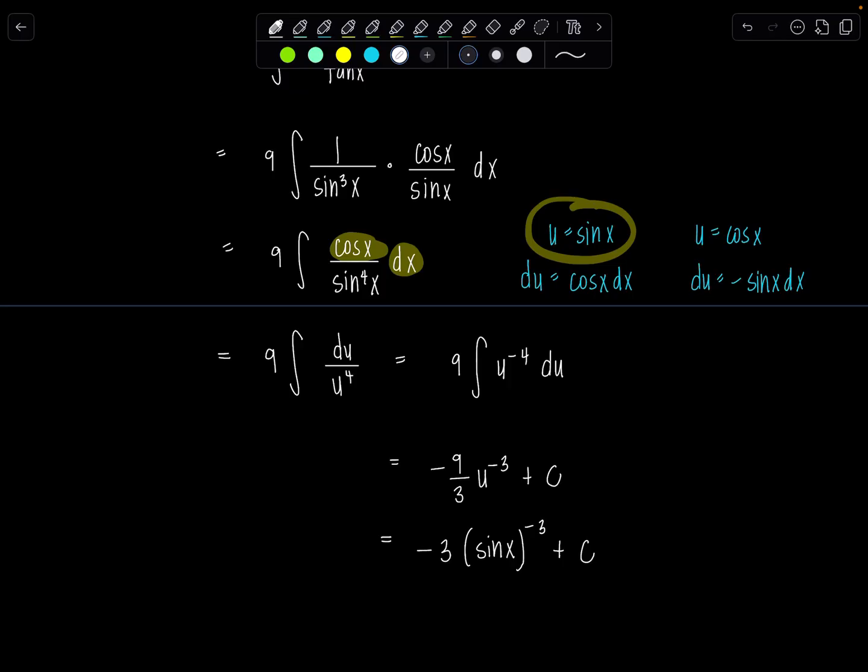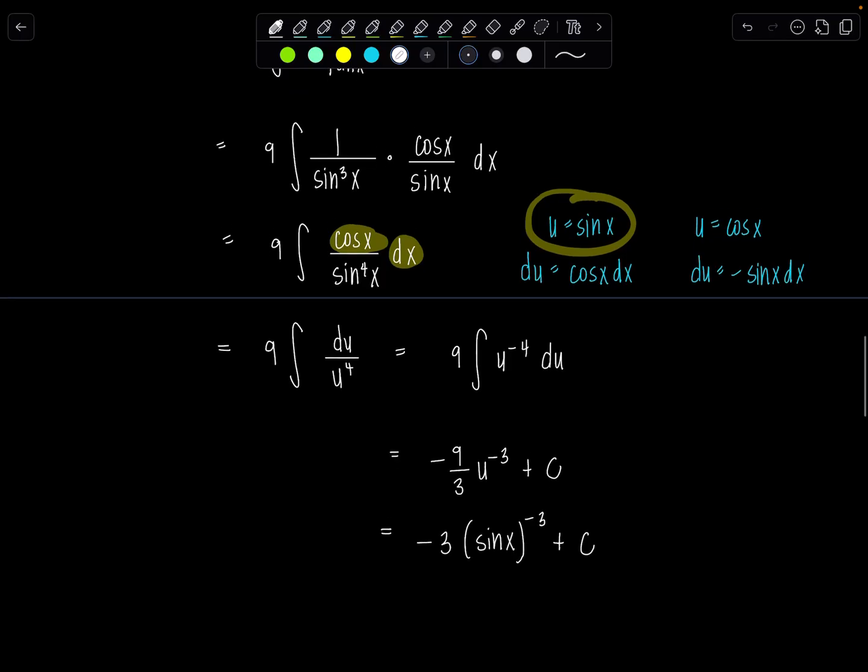But since sine is being raised to the negative third, that's the same as one over sine of x cubed. And then I can write my final answer as negative three cosecant cubed x plus c.